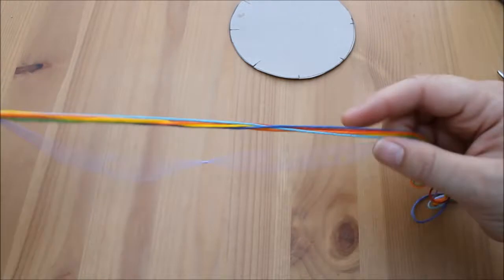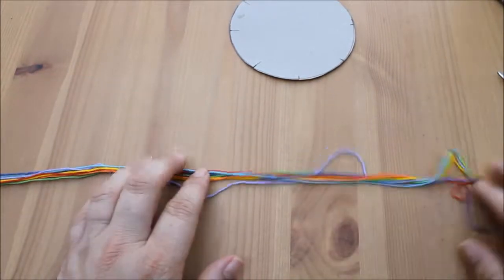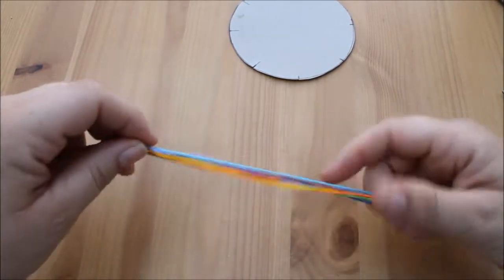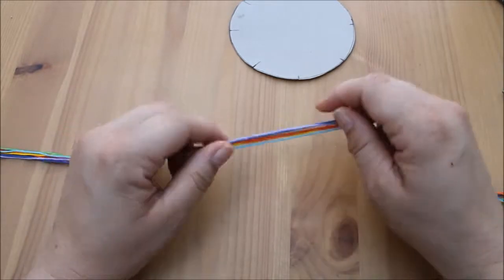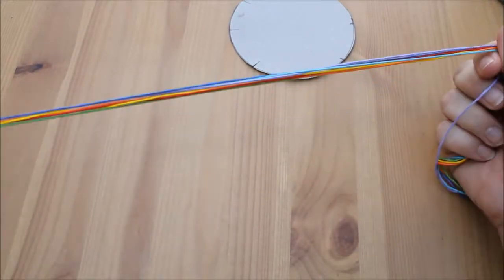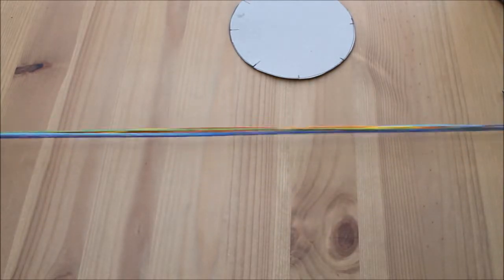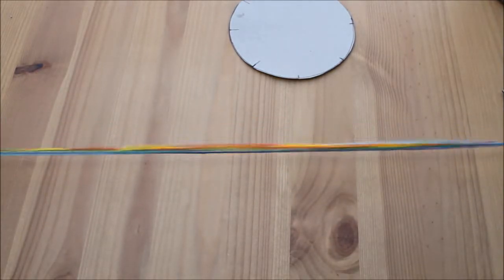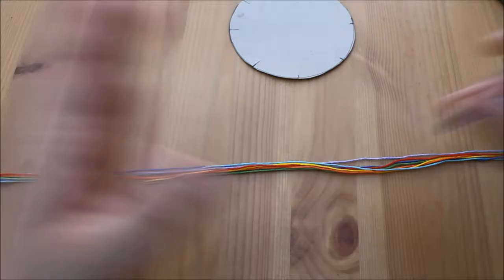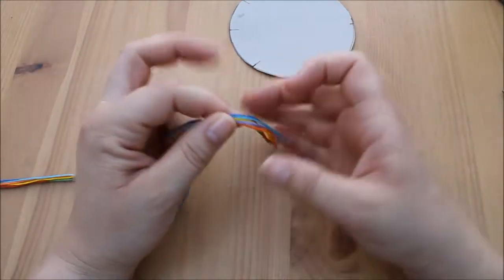So I've chosen rainbow colors, but like I say you can choose anything that you want. Now I've cut this to a meter long, just short of a meter long, but you just need to cut it to however long you think you will need it. So what we need to do first is tie a knot in one end.